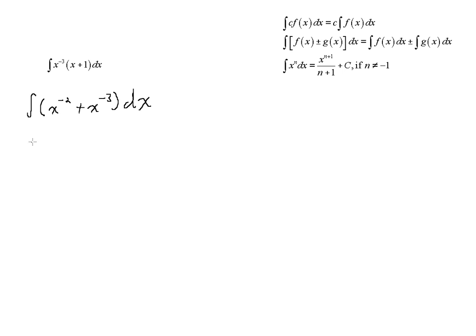So we'll say x to the negative two plus one is negative one, over that new power. Plus x to the negative three plus one is x to the negative two, over that new power, negative two, plus that arbitrary constant. And I'm just going to rewrite this like this.